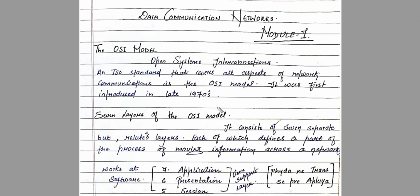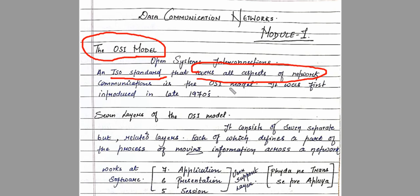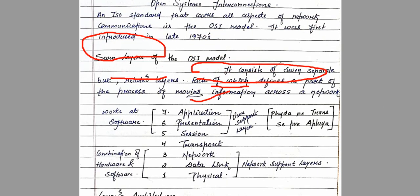In this lecture on data communication and networks, we will talk about network models. Firstly, we will talk about the OSI model. OSI stands for Open Systems Interconnection. The OSI model is an ISO standard which covers all the aspects of network communications. It was first introduced in the late 1970s. This OSI model consists of seven layers.